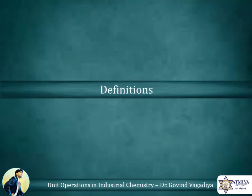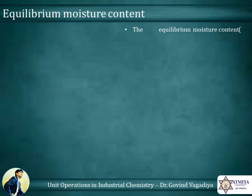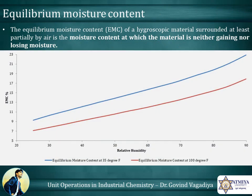Definitions and Terminologies. Equilibrium Moisture Content (EMC): the equilibrium moisture content of a hygroscopic material surrounded at least partially by air is the moisture content at which the material is neither gaining nor losing moisture. From the graph of EMC, we can observe that whenever temperature is higher, EMC is lower. So the relationship between EMC and temperature is inversely proportional.